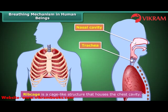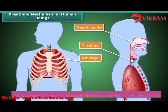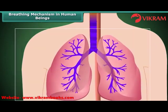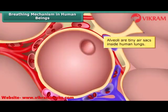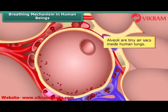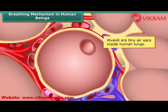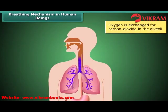These ribs form a cage-like structure called the ribcage. A large muscular sheet called the diaphragm forms the floor of the chest cavity. The ribcage and the diaphragm show movements during inhalation and exhalation. Once the inhaled air reaches the lungs, it enters tiny air sacs known as alveoli inside the lungs. Here in the alveoli, gas exchange takes place — that is, oxygen is exchanged for carbon dioxide. The oxygen in the alveoli travels into the bloodstream and is used up in cellular respiration. The carbon dioxide in the blood moves into the alveoli and is expelled out of the human body through exhalation.